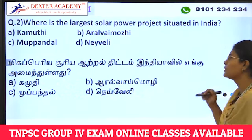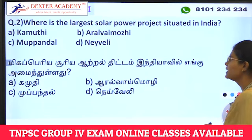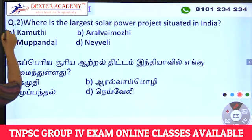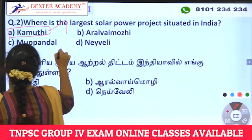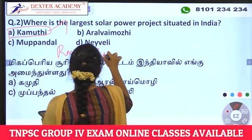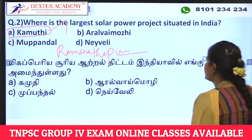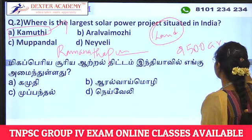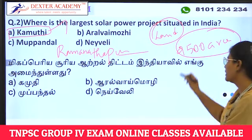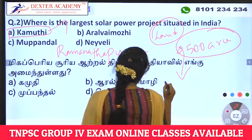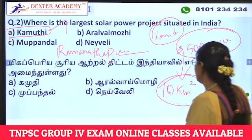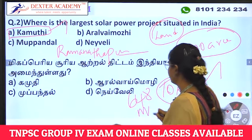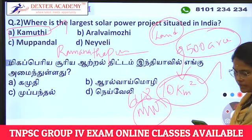Second question: where is the largest solar power project situated in India? The land area is 25 acres, or 10 square kilometers. The capacity is 648 megawatt.